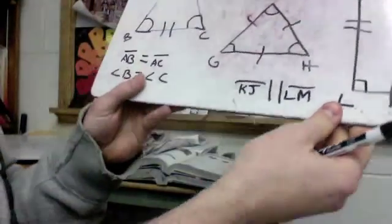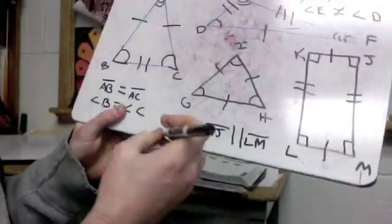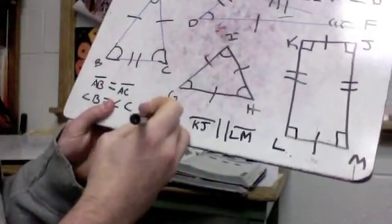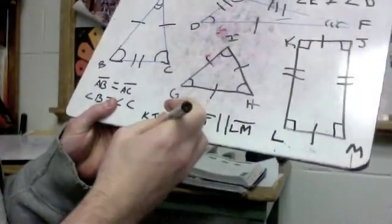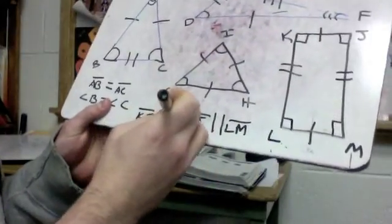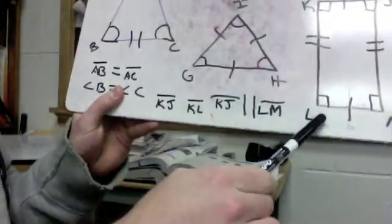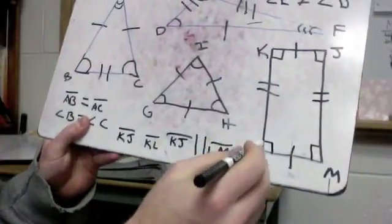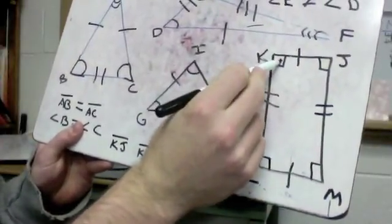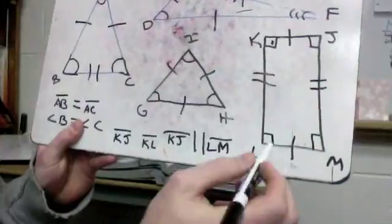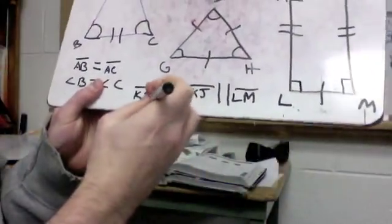One more thing you might see for a picture like this. We'll keep segment KJ and then take segment KL — K to L. These two segments, if you think about it, when they come together they make a square angle — a right angle, a 90-degree angle.